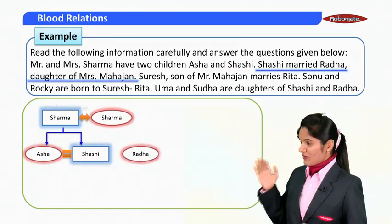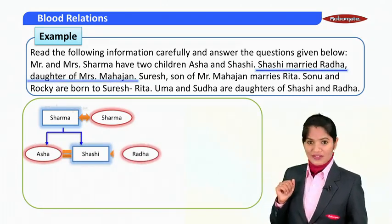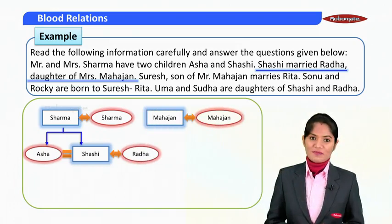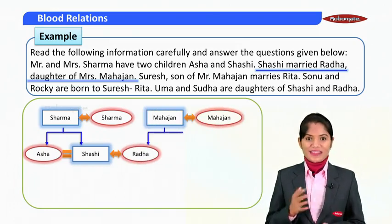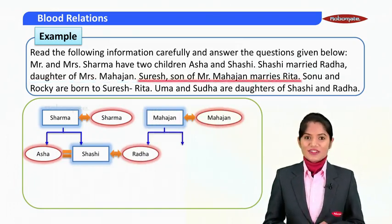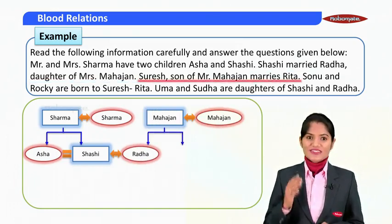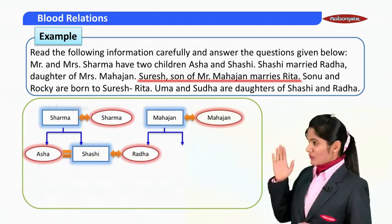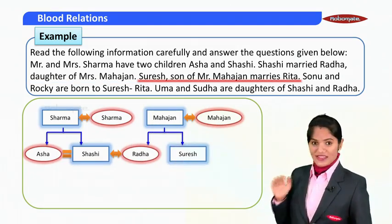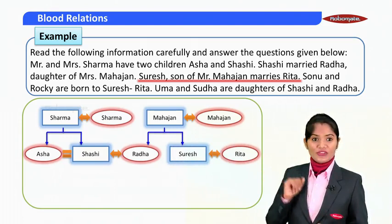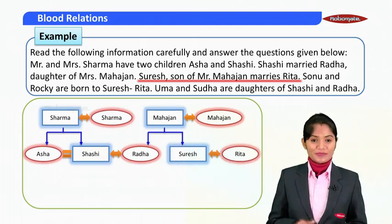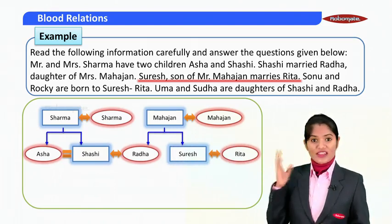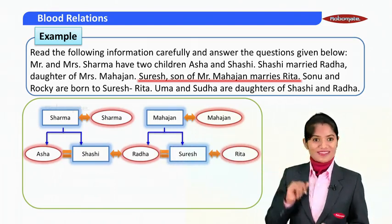So Shashi married Radha, who is the daughter of Mrs. Mahajan. The next statement: Suresh, son of Mr. Mahajan, marries Rita. So Mr. Mahajan has a son who marries Rita. By this relation, Suresh and Radha will be siblings.